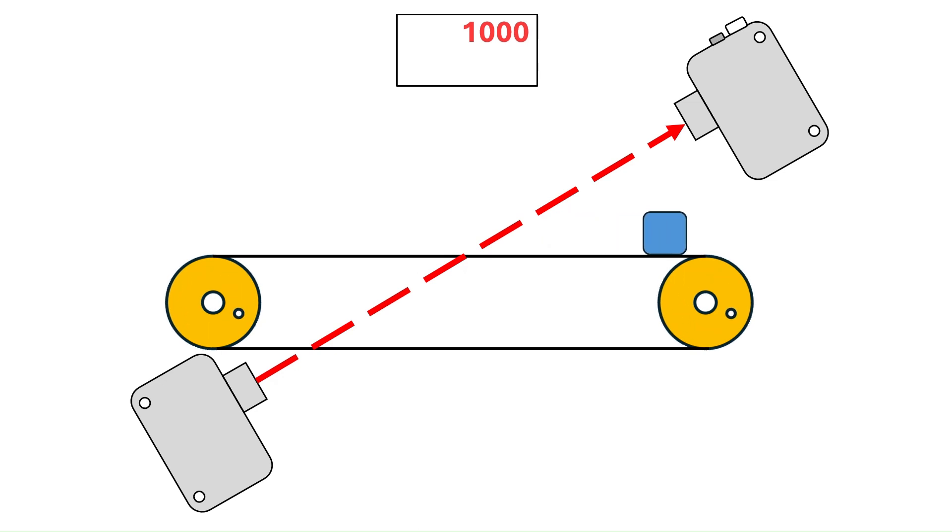Then, once the box has passed by the sensor, the live value jumps back up to 1000 because the sensor is once again receiving light from the transmitter.